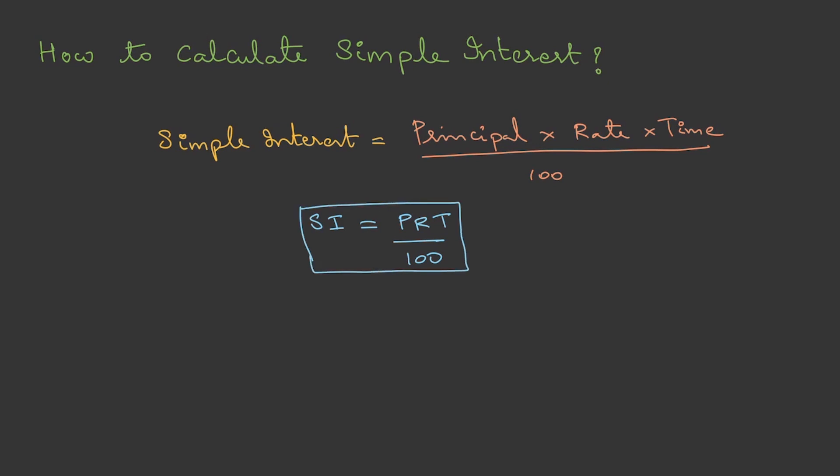If the question asks for simple interest, we can use this formula. Or if it is rate of interest, then R = SI × 100 / (P × T). Time is T = SI × 100 / (P × R). And principal is P = SI × 100 / (R × T). So basically, the other permutations possible with this particular formula.